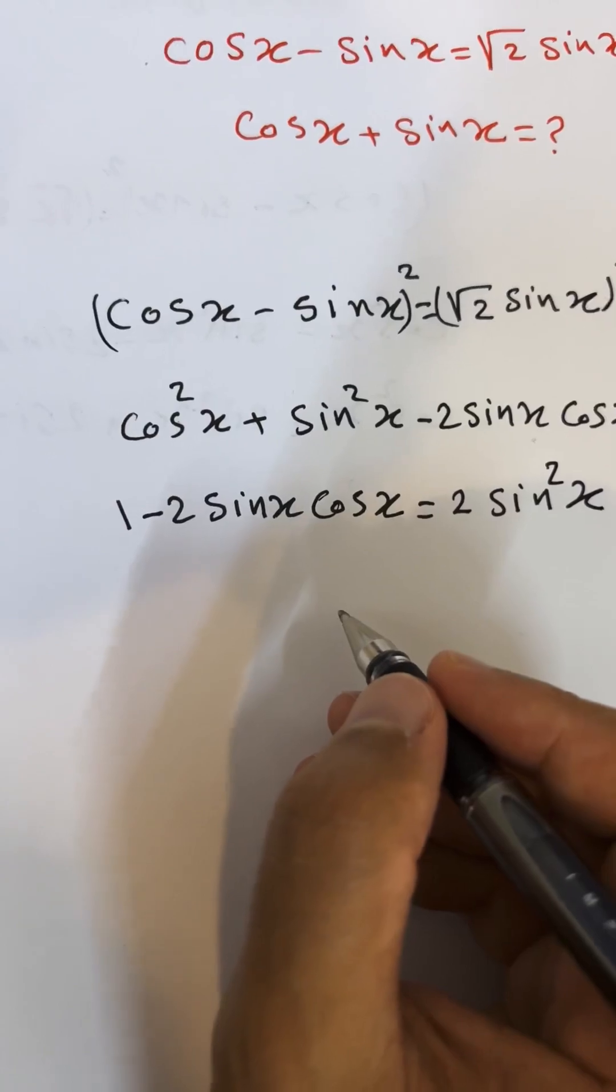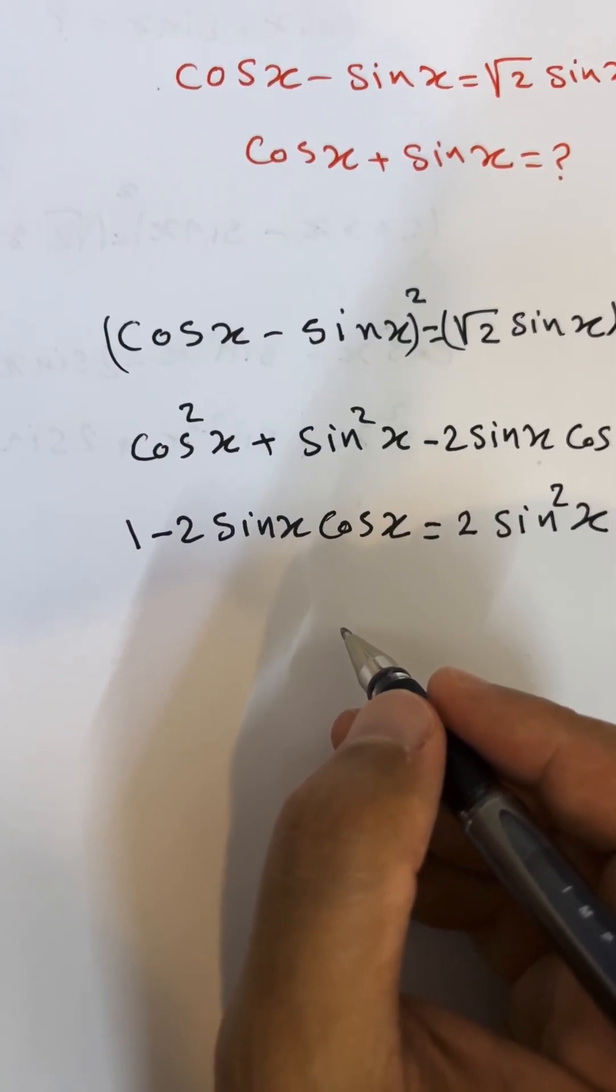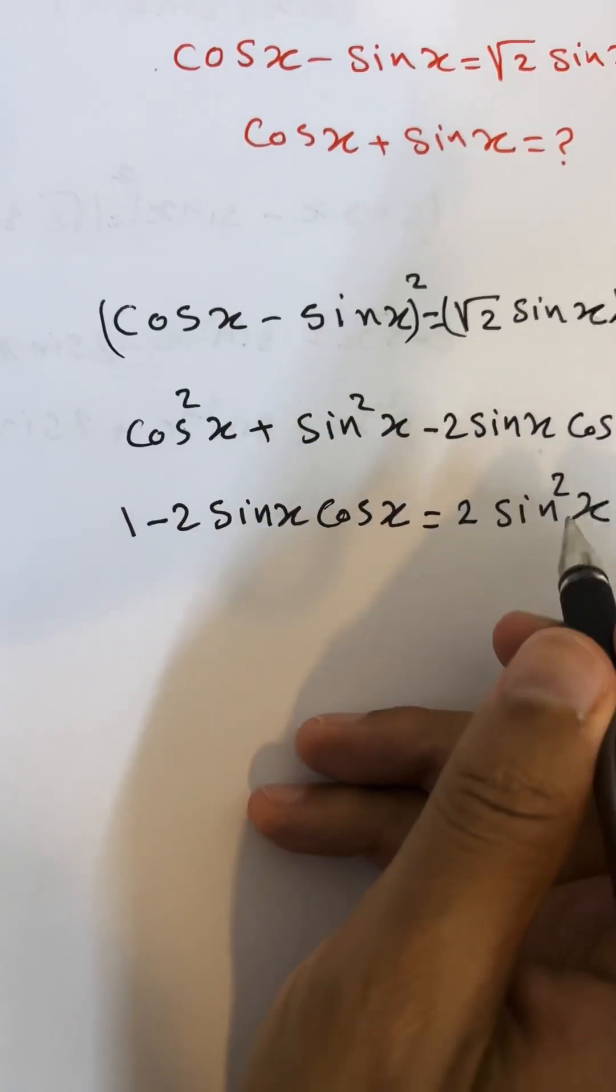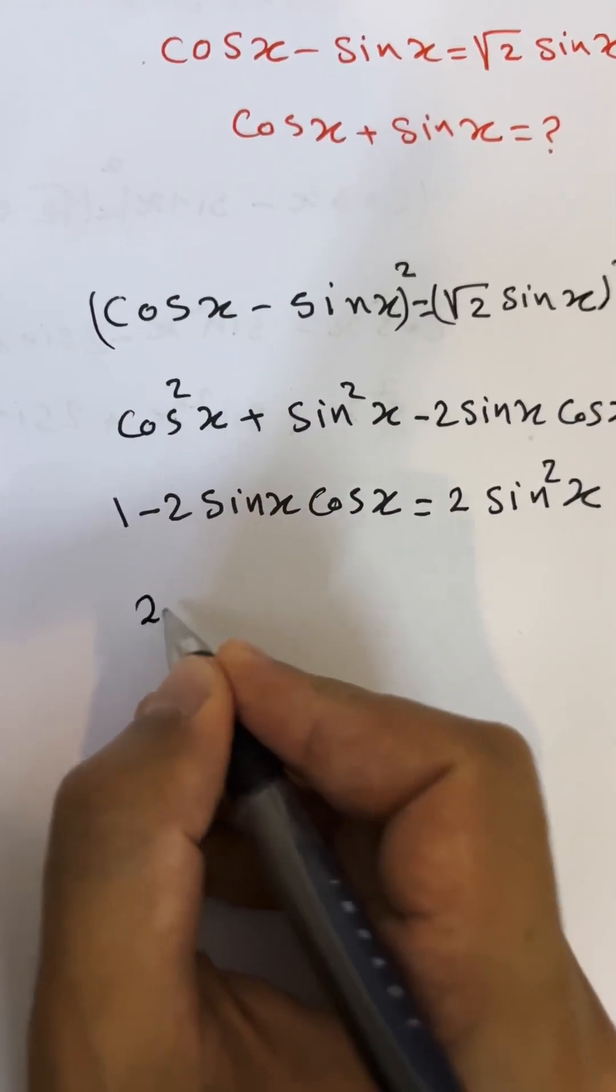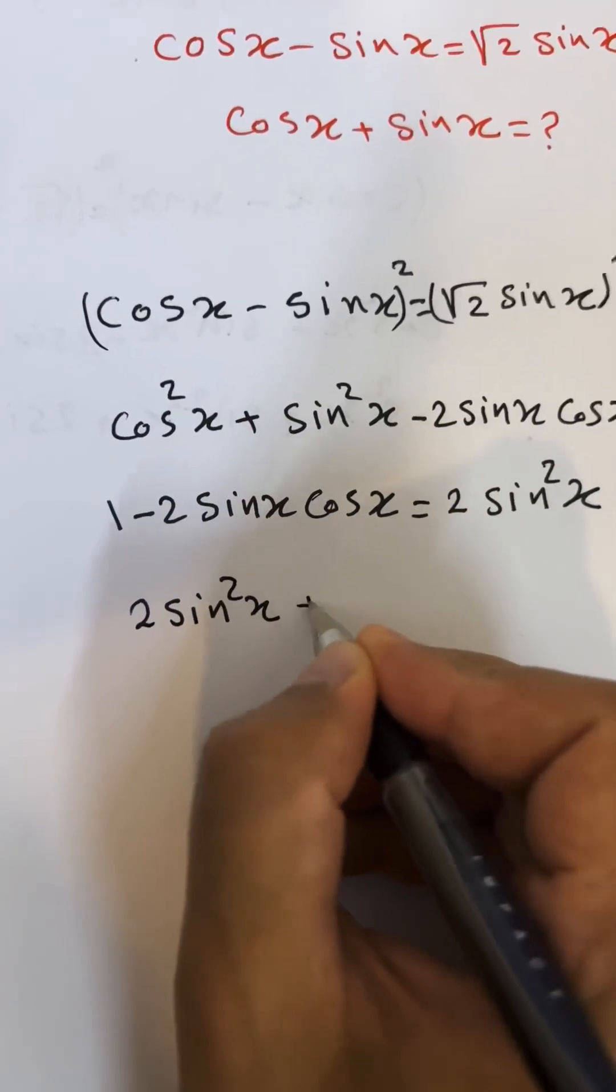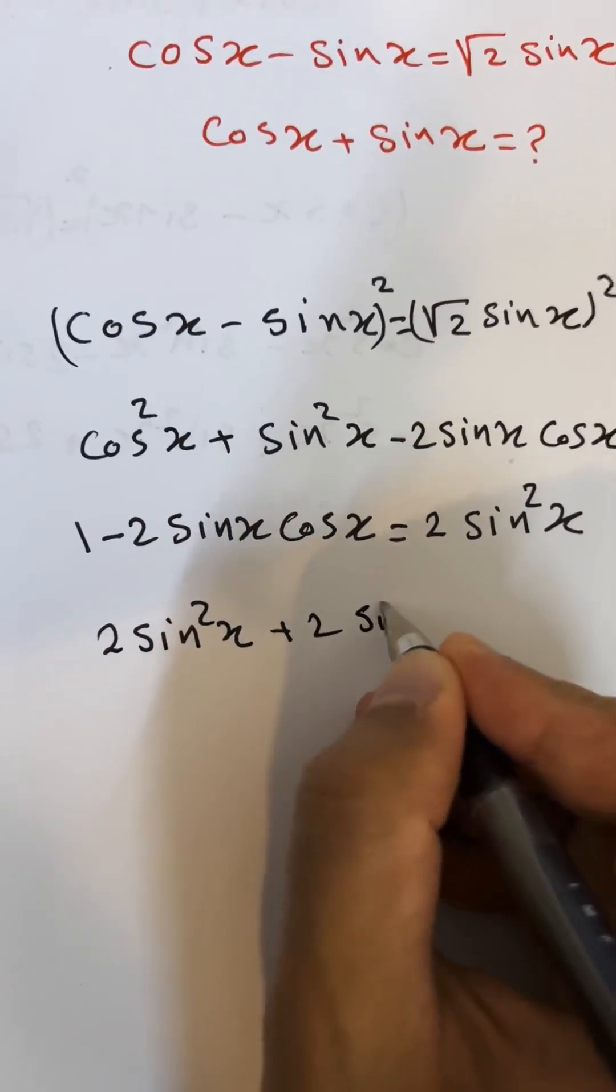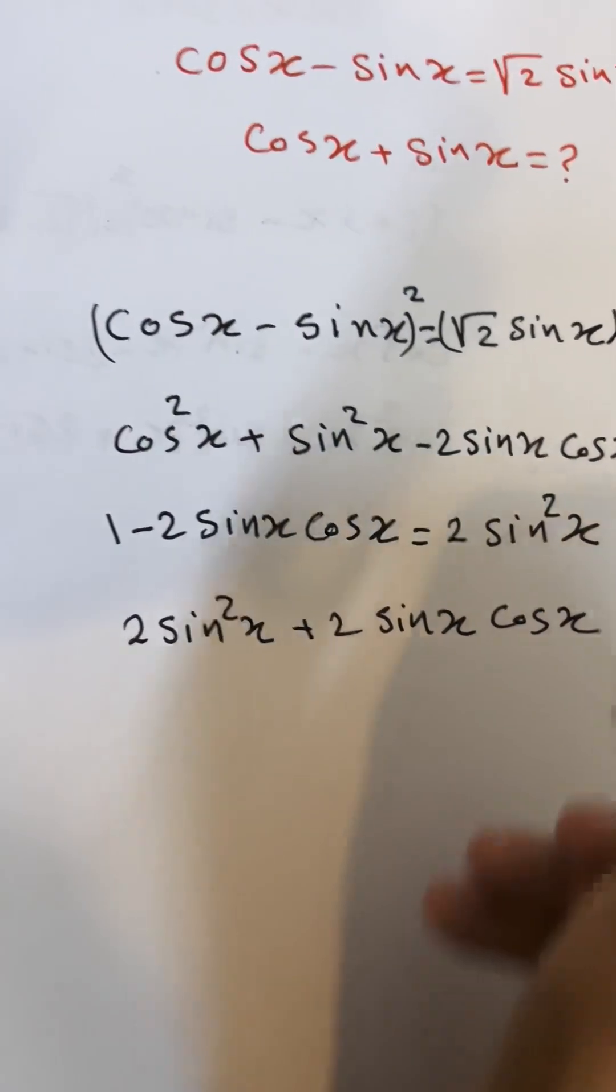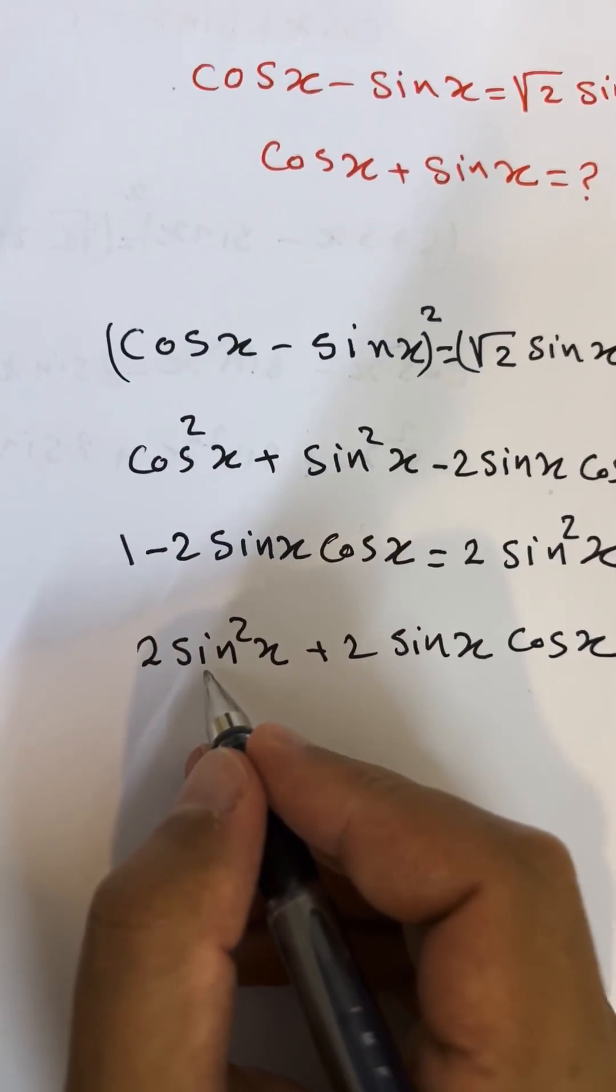What I'm going to do is bring this one to the other side, so I have 2 sine squared x plus 2 sine x cosine x.